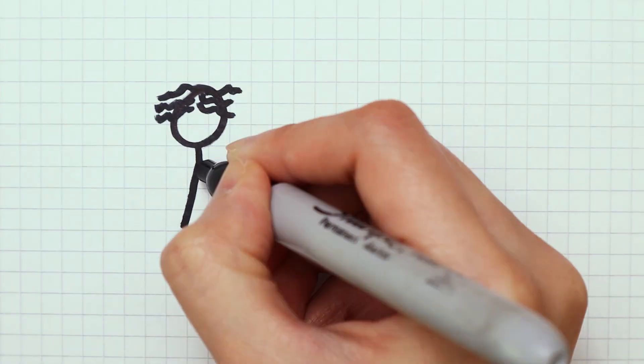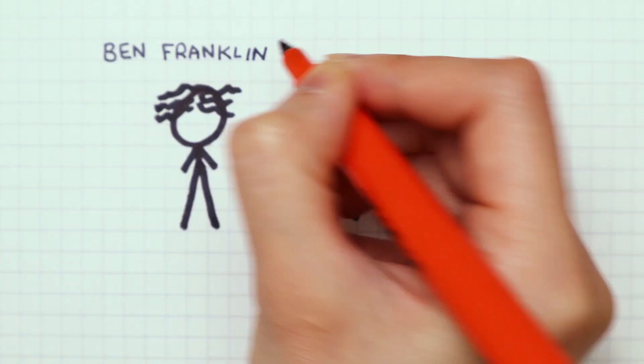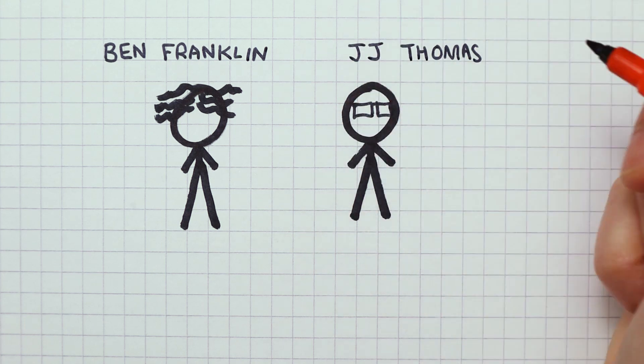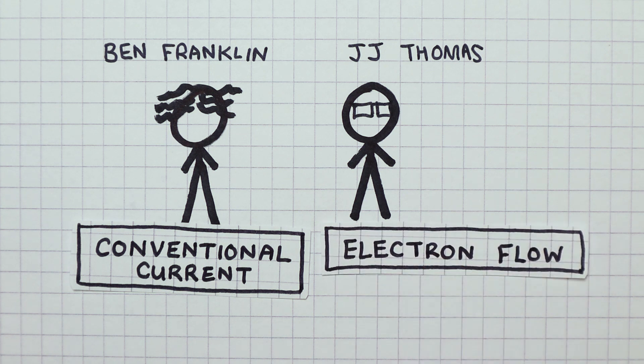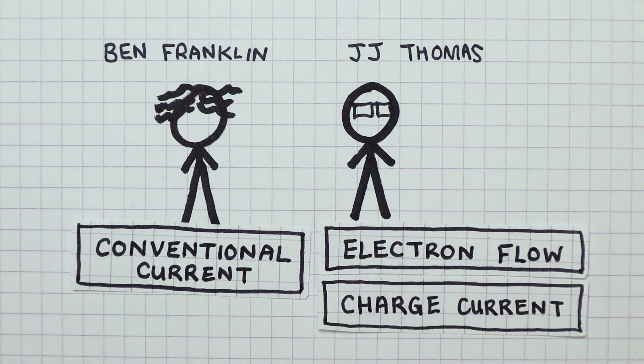To distinguish the two theories, Ben Franklin's incorrect theory of current is known as the conventional current. The real direction of electron flow is sometimes called the charge current.